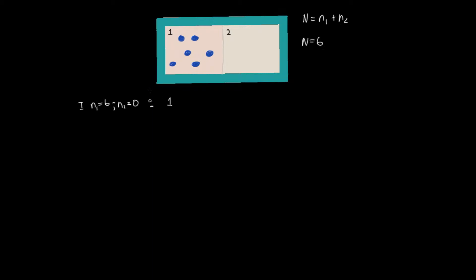The number of ways we can arrange particles in a configuration is called the multiplicity, given the symbol W. In our second state, we move one particle from box 1 into box 2, giving n1 equal to 5 and n2 equal to 1. We can choose which particle goes into box 2, and there are six different ways to choose that particle since there are six particles to choose from. Once chosen, all other states are fixed, so W equals 6.